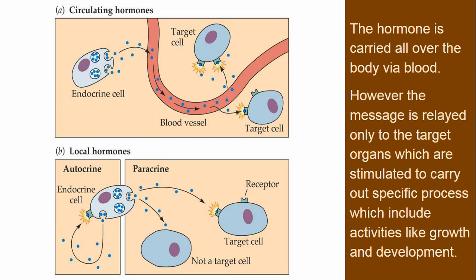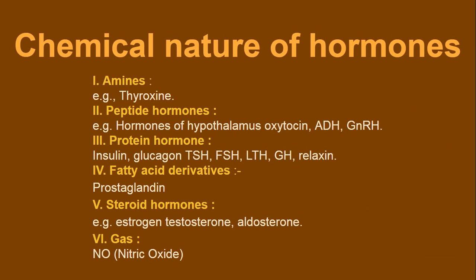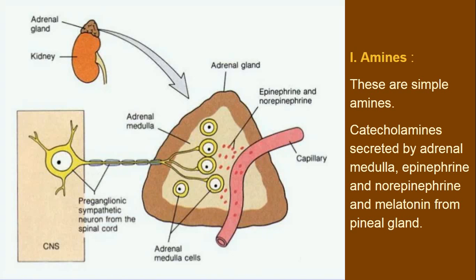Now let's move to the second half of our video lecture — the chemical nature of hormones. There are several chemical natures: amines, peptide hormones, protein hormones, fatty acid derivatives, steroid hormones, and gas form hormones. The first type is amines, which are simple amines.